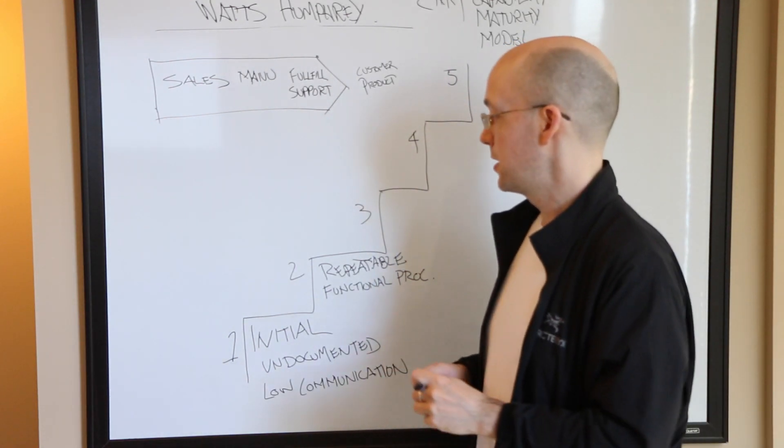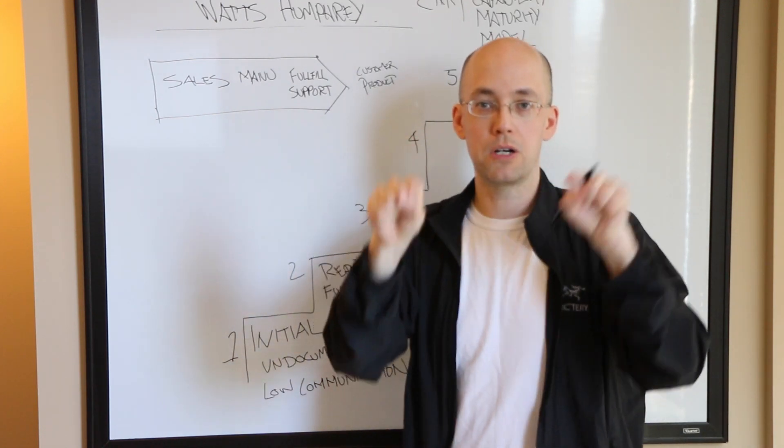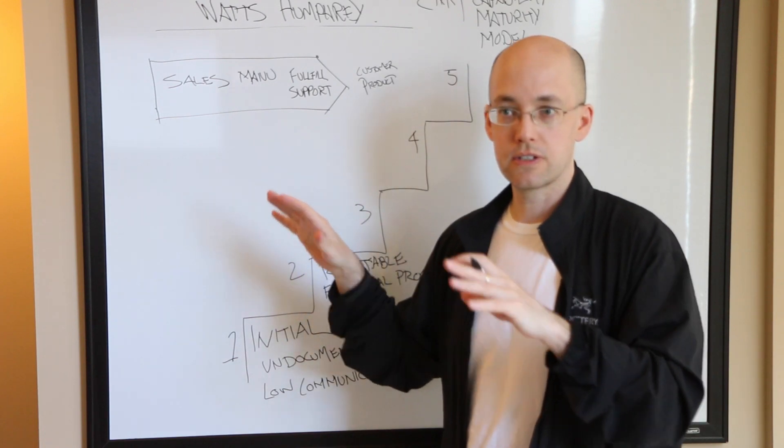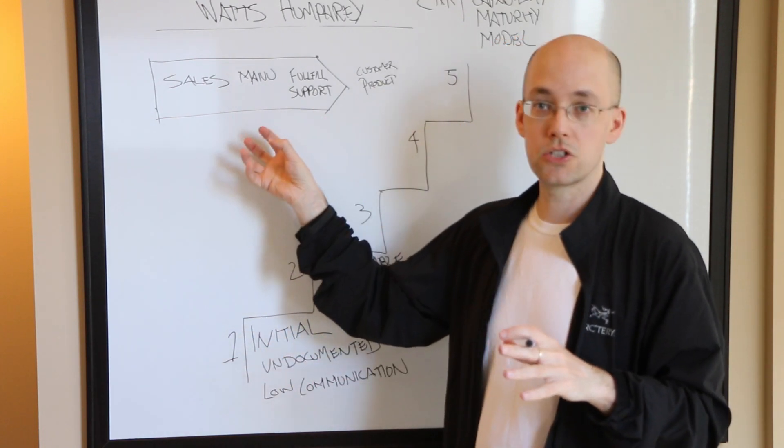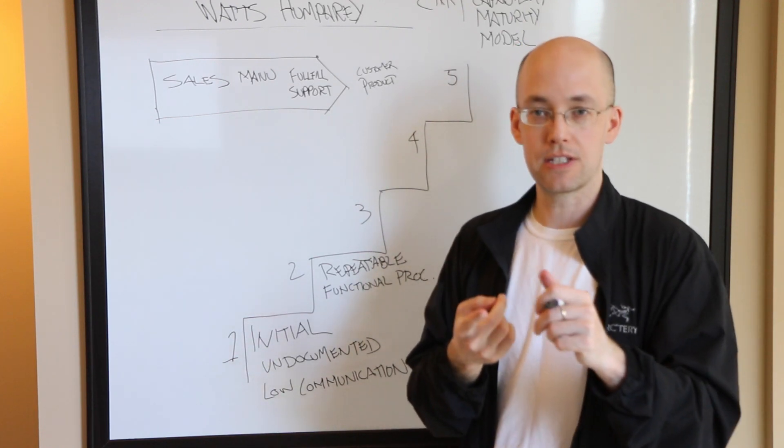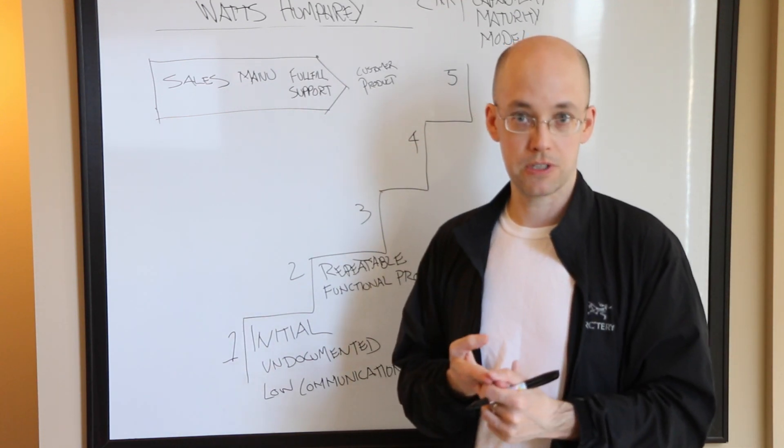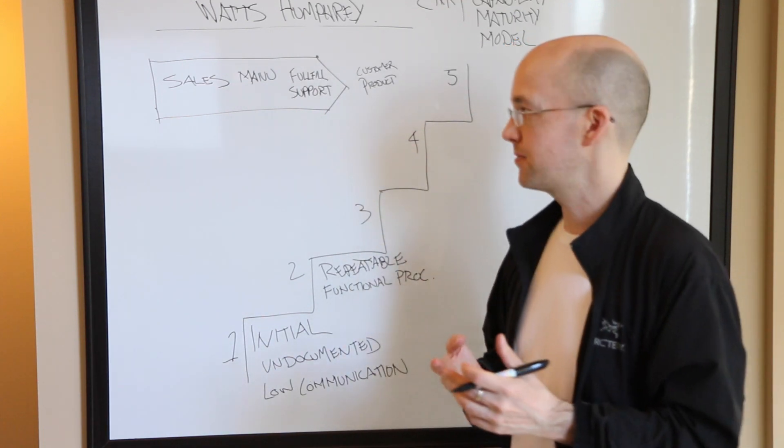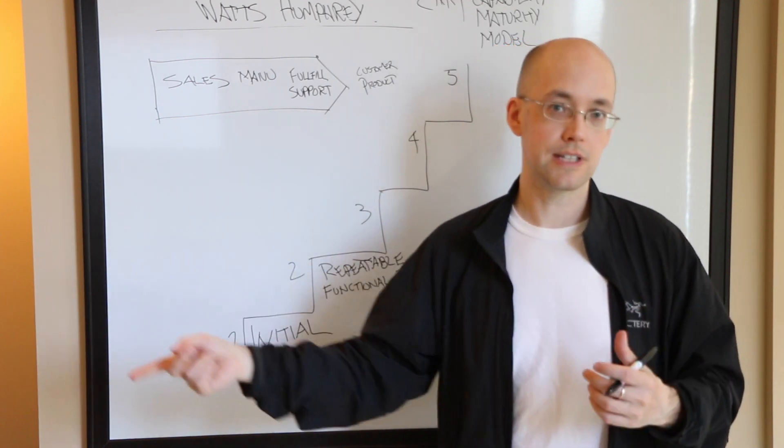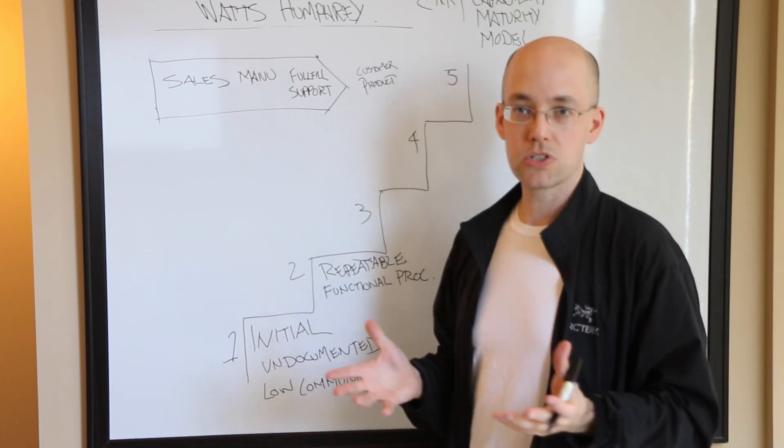Each of these areas within the business may have some processes established, but when we're at this Level 2, they may not be integrated. They're still compartmentalized. Compartmentalization is not a good place to be. We want the communication so that we're not wasting.